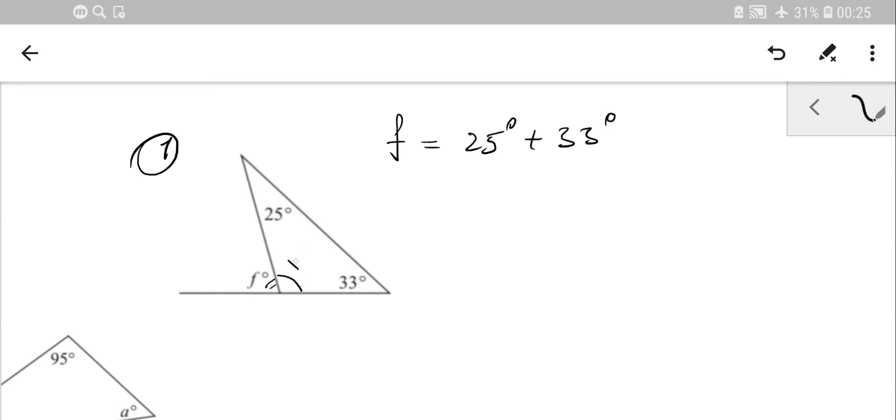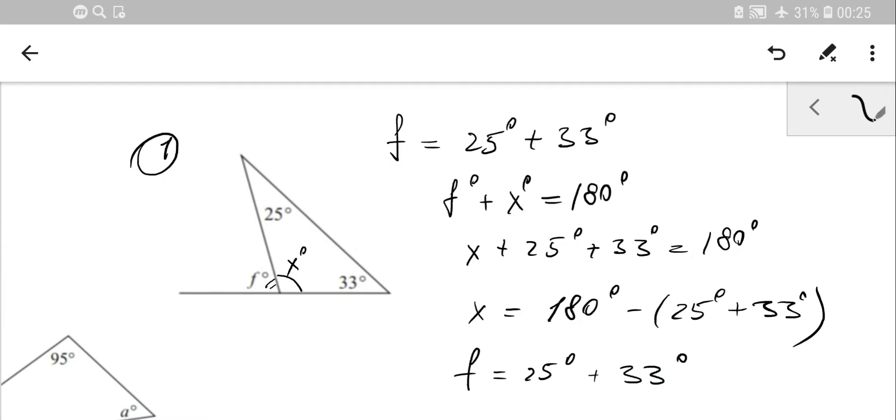You can also go through another way of doing this. Probably if you're able to define angle X, you know that angle F and angle X together will give you 180. So X with the couple 25 and 33 will give you also 180. That's simply the sum of all interior angles. So from there, it's gonna be 180 minus the sum of 25 and 33. So we found X, and we'll actually have the same: F equals 25 plus 33.